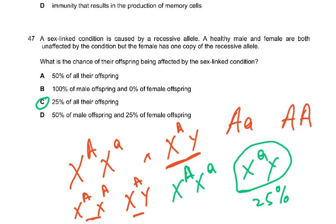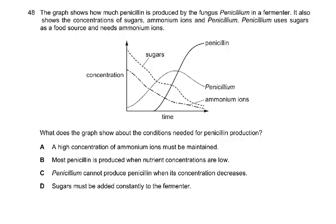This could also be stated as 50% of male offspring being affected, which would also be correct. None of the females are affected because a recessive trait only shows if both small-a alleles are present. In a sex-linked disorder, even one recessive allele on the male's X chromosome shows its effect because there is nothing on the Y chromosome to null its effect.